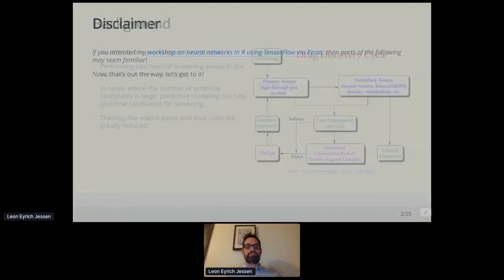So the background for this data science case story: we all know working in the pharma industry that identifying drug candidates is really expensive. Performing biochemical assays and screening candidates in the lab is time consuming and requires a lot of equipment. So in cases where the number of potential candidates is large, we can apply predictive modeling to help prioritize candidates. If we can do that, we can limit the number we actually need to test and reduce costs.